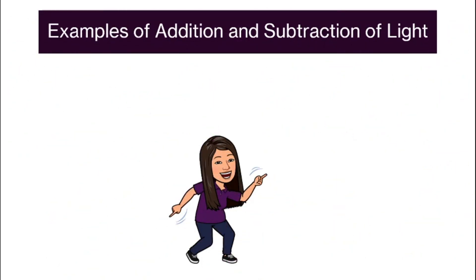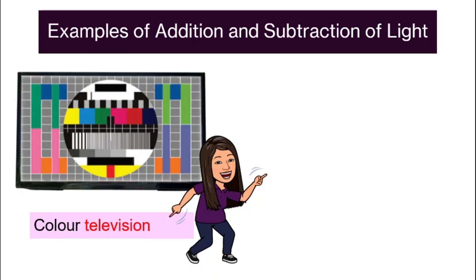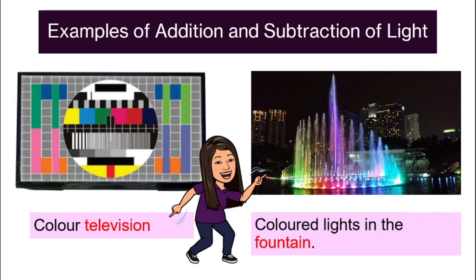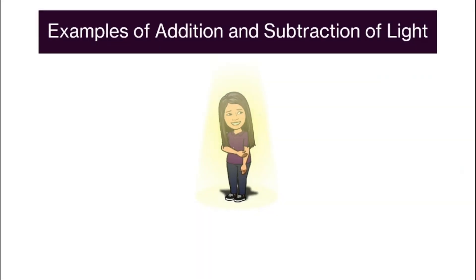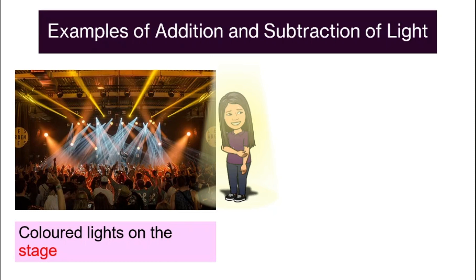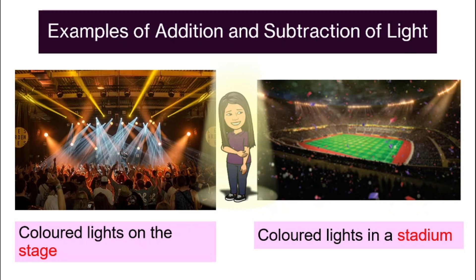What are some examples of addition and subtraction of light in our daily life? Number one, our colorful television — we see movies in colors. Also, beautiful colored lights installed in water fountains that make different patterns to music, like the one in front of KLCC. And if you've ever attended any concert, they normally have colored lights on the stage, and we also use colored lights in stadiums.